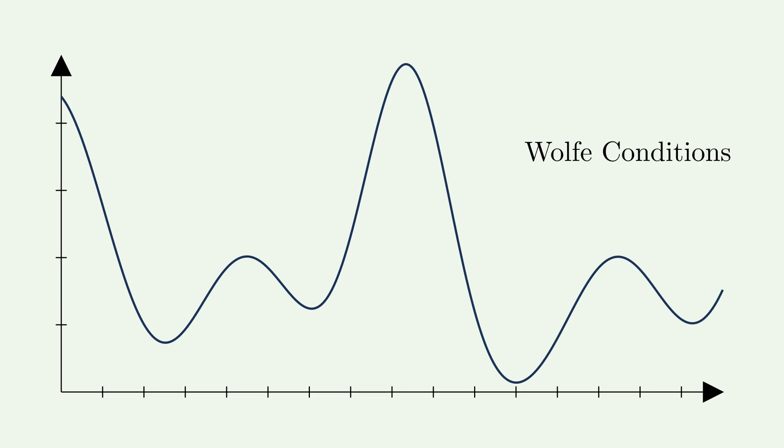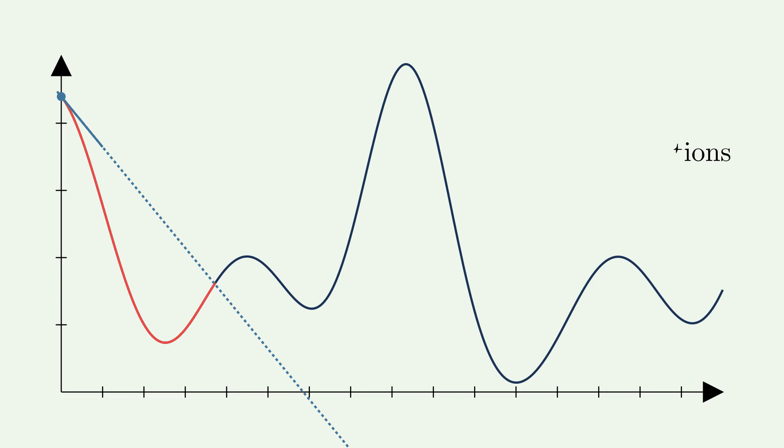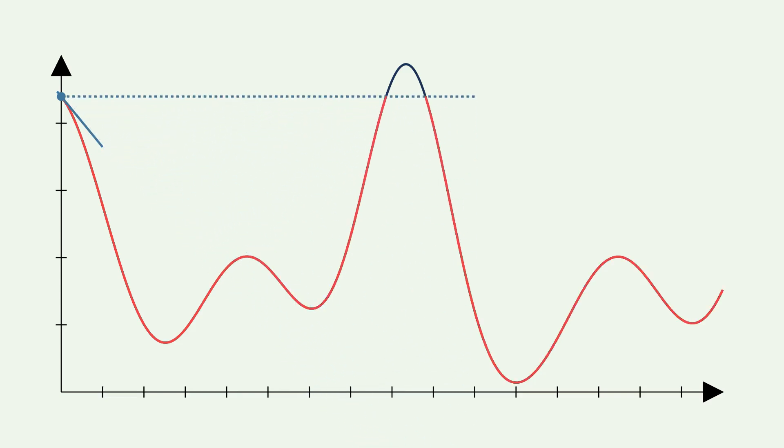The first condition is quite obvious: we want the function value to decrease. This guarantees that the function value at the current point decreases in each iteration. This condition is stated such that the upper bound is a decreasing line, meaning to justify a larger step size we would need a larger decrease in the function value. In this visualization the valid step sizes are shown in red. Often this constraint is made quite small and almost any reduction of the function value is accepted.